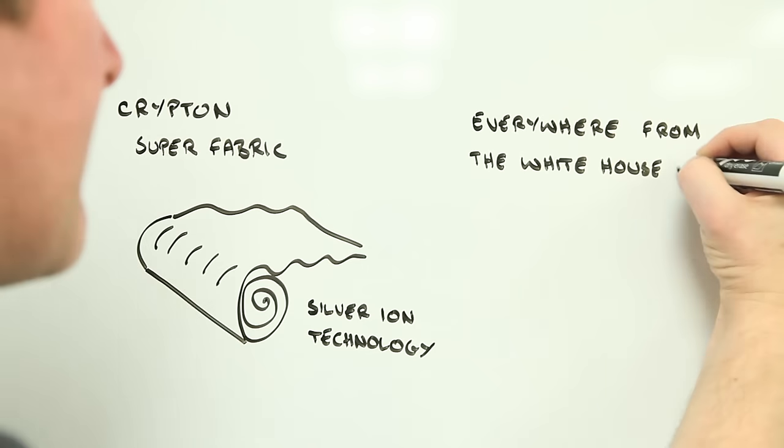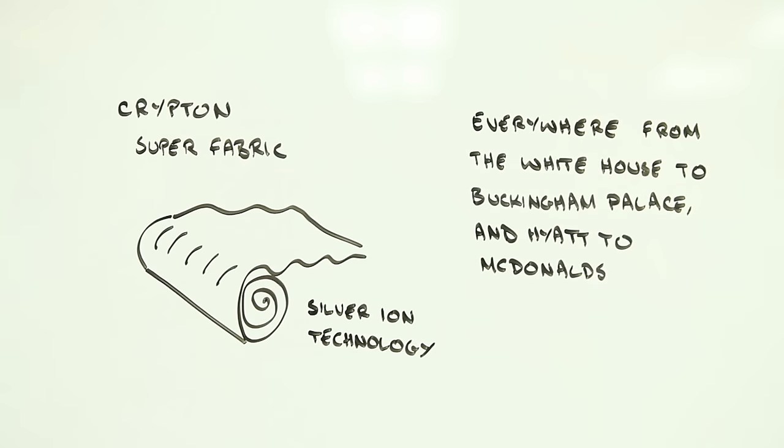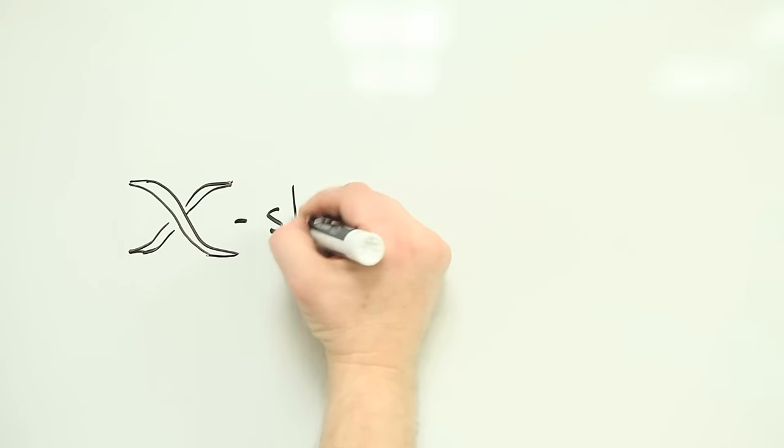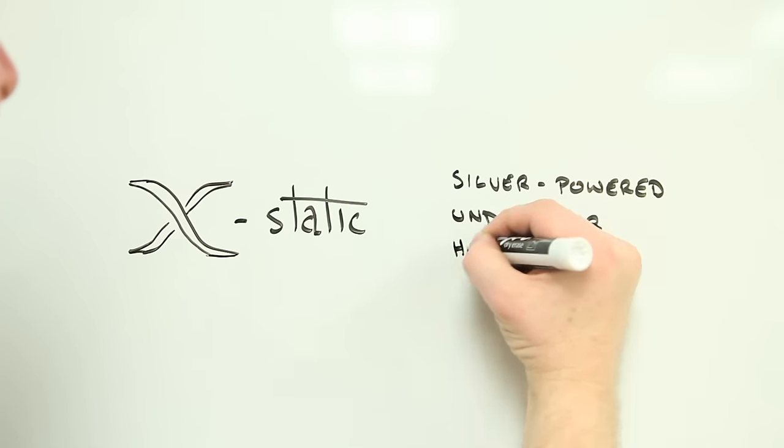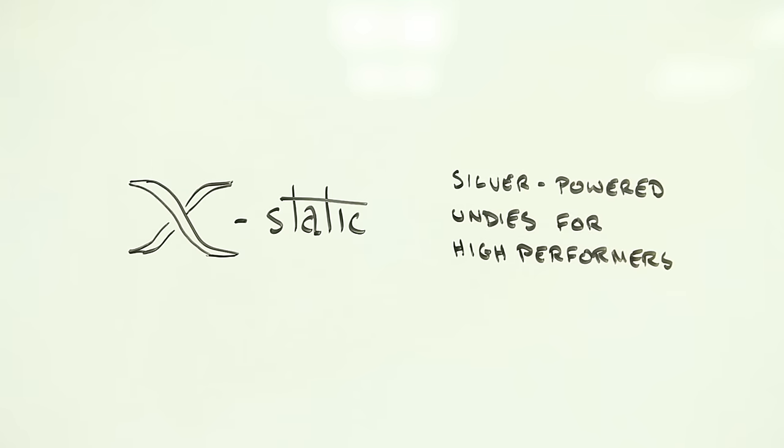And products using ecstatic silver technology are widely used by athletes, the military, medics, and others. Both companies use silver as an antibacterial agent, but as far as can be told, neither company uses nanoparticles.